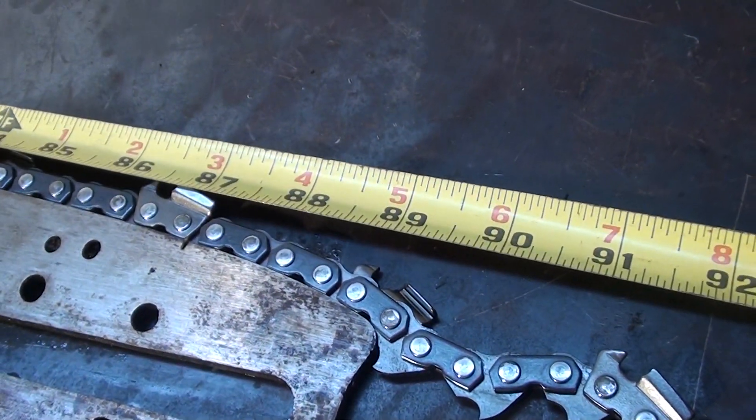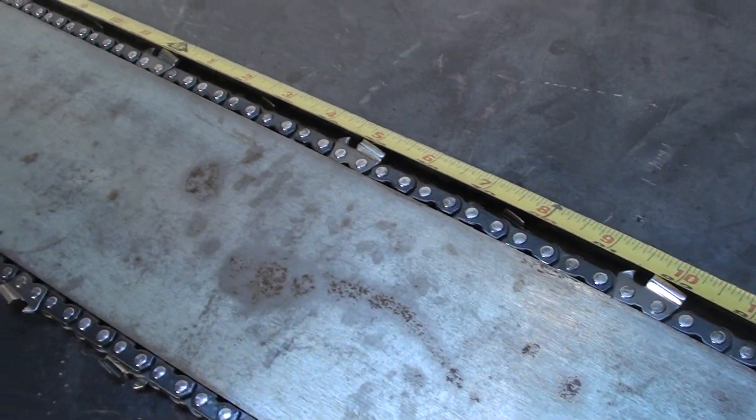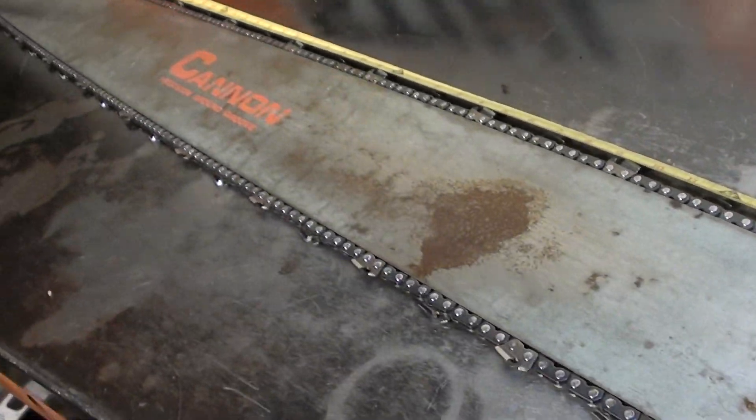If you've got a big Stihl chainsaw and you need to do some ripping, here is a perfect combination. Rails are in perfect shape.